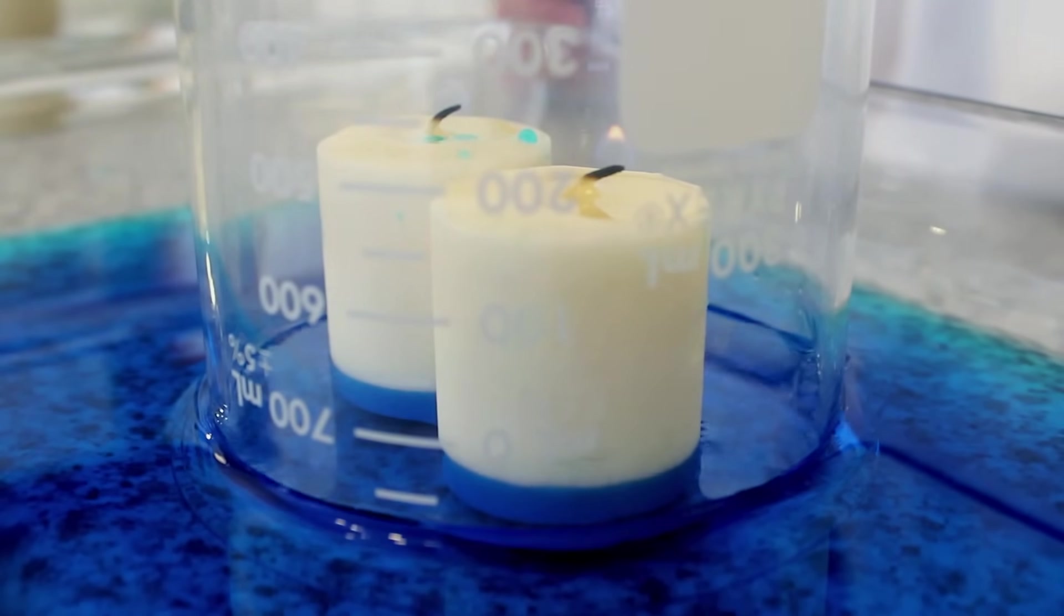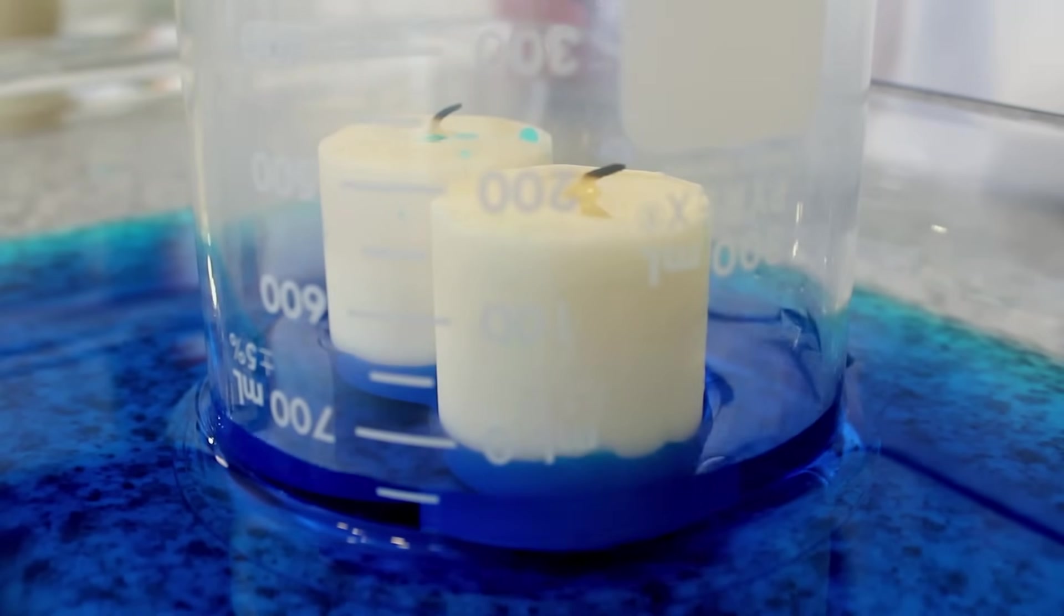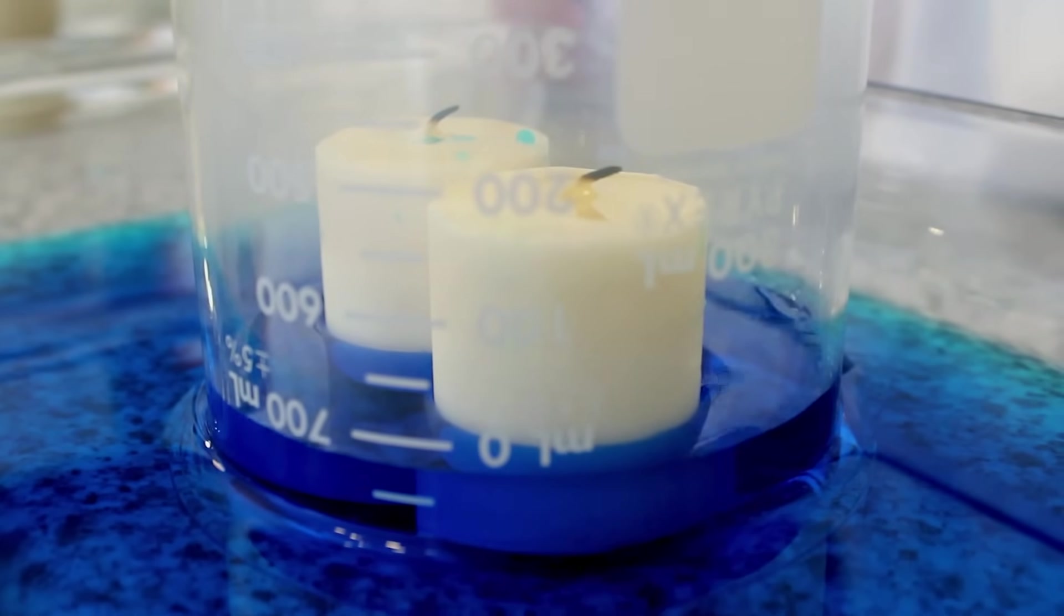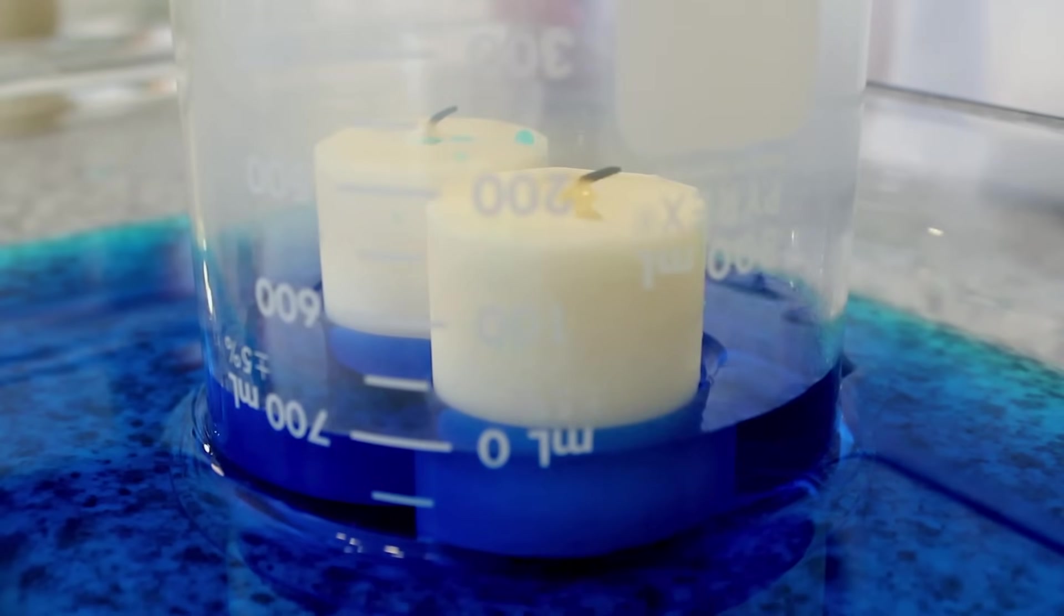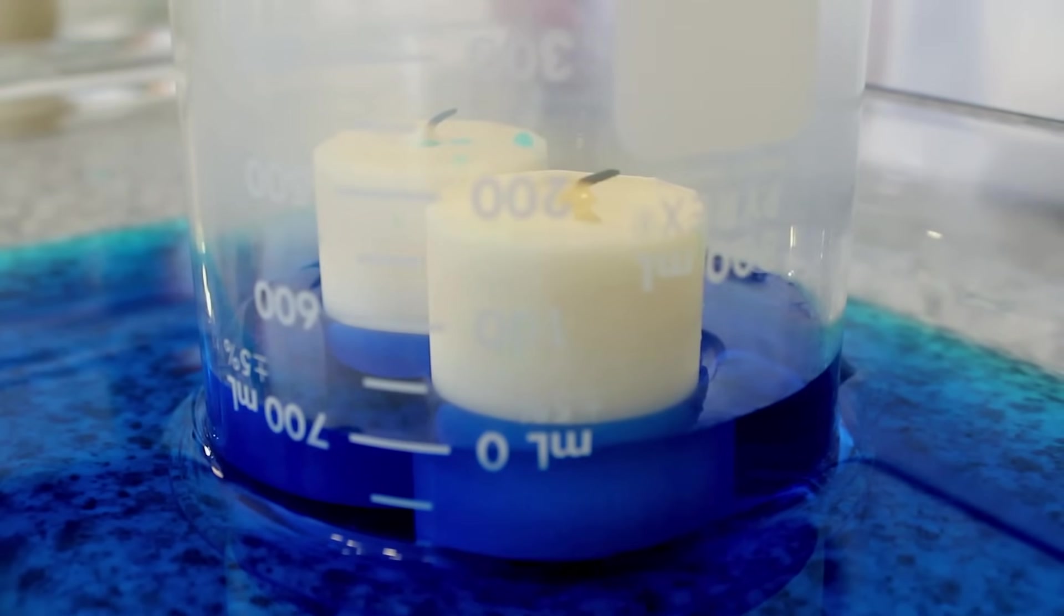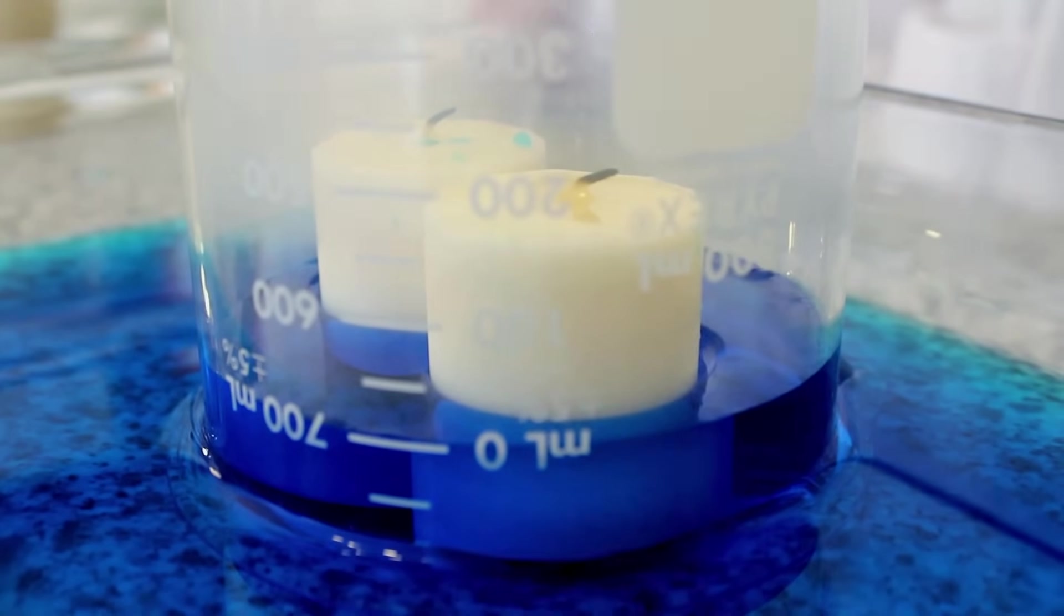If you watch closely, you'll see that the water level underneath our beaker begins to rise as the candles fade away. The water level will continue to rise for a short time after the candle has been fully extinguished. You'll notice that the water underneath the beaker is much higher than the water in the shallow dish.